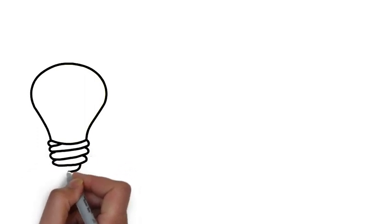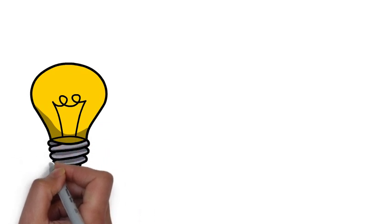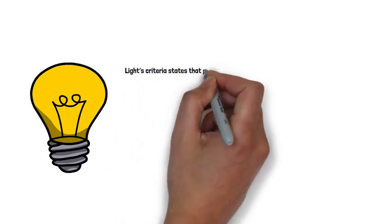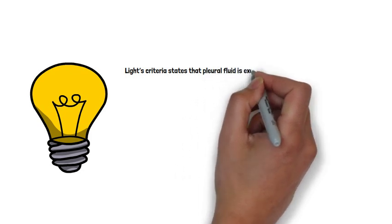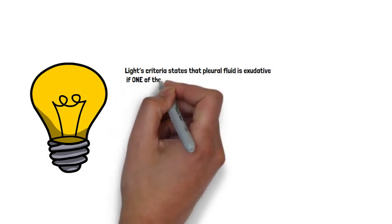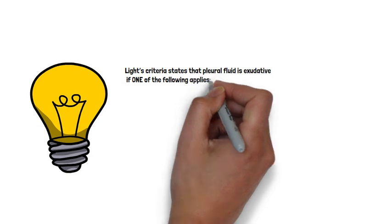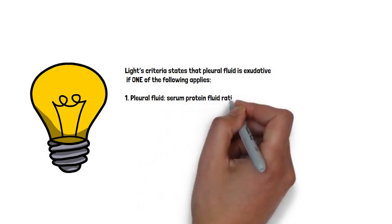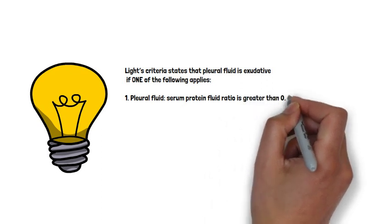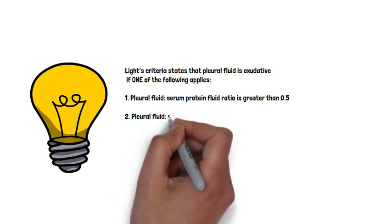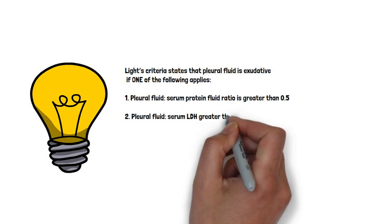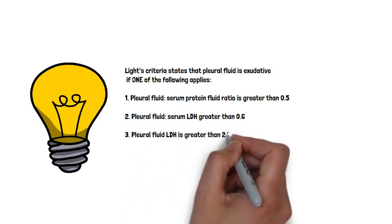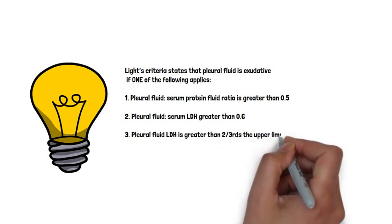So if a pleural effusion has a protein level of between 25 grams per liter and 35 grams per liter, you can use a criteria called Light's criteria. So Light's criteria states that pleural effusion is exudate if one of the following applies. And this is really important. You need to remember it's only one of these three criteria needed. So the first one is, it's exudate if the pleural fluid to the serum protein-fluid ratio is greater than 0.5. It's exudate if the pleural fluid to the serum LDH is greater than 0.6. And it's exudate if the pleural fluid LDH is greater than 2/3 the upper limit of normal serum. So you just need one of those three criteria to make it exudate.